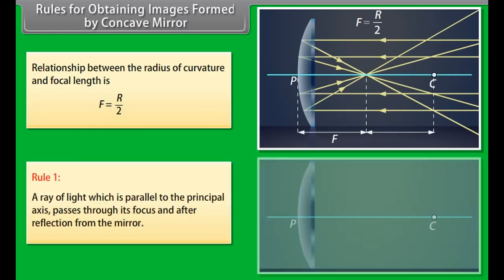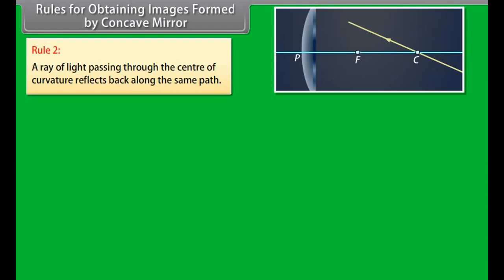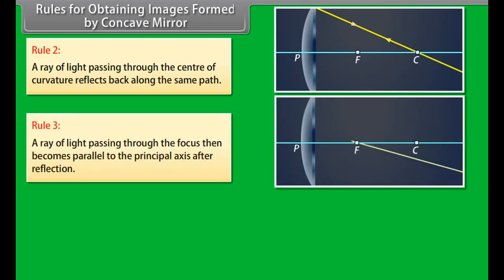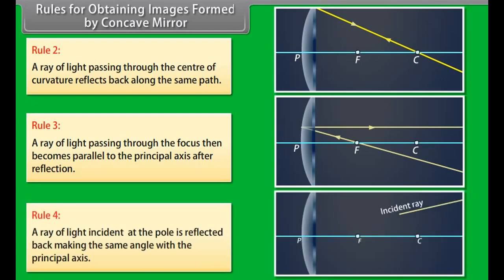Rules for obtaining images formed by concave mirrors: Rule 1 — A ray of light parallel to the principal axis passes through its focus after reflection. Rule 2 — A ray passing through the center of curvature reflects back along the same path. Rule 3 — A ray passing through the focus becomes parallel to the principal axis after reflection. Rule 4 — A ray incident at the pole is reflected back making the same angle with the principal axis.